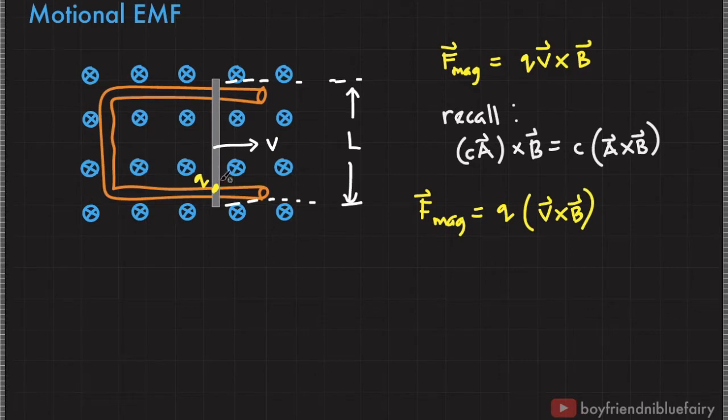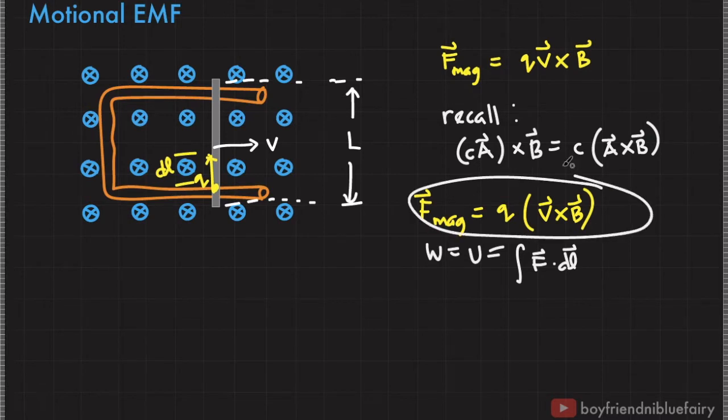Now going back to the figure, this is the charge we are observing, and once it moves a distance dL, for example, from this point to this point, let's name that displacement as dL. If this charge moves a distance dL, then the work done in moving this charge is F dotted to dL. I can calculate the dot product of this expression with dL to get an expression for energy or the work done on the charge.